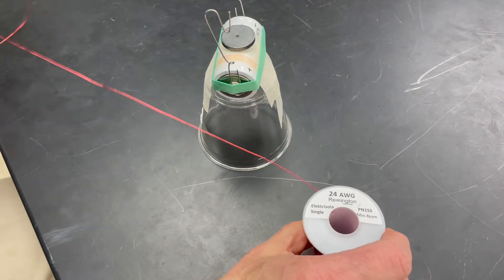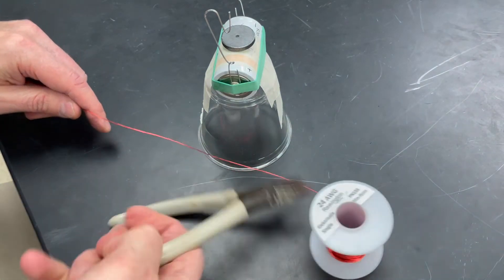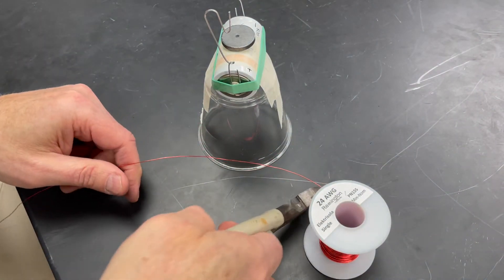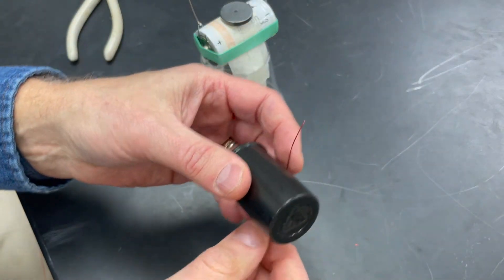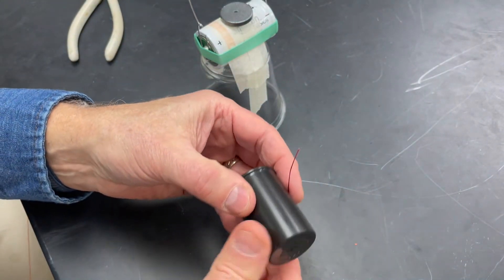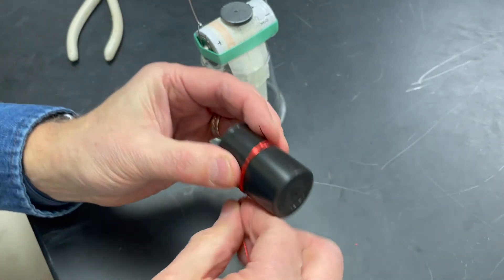Now you're going to need about one meter of wire. This is 24 gauge magnet wire. It's called that because it's often used for making electromagnets. And we need a coil that's about one inch in diameter. I'm wrapping it around a film canister.